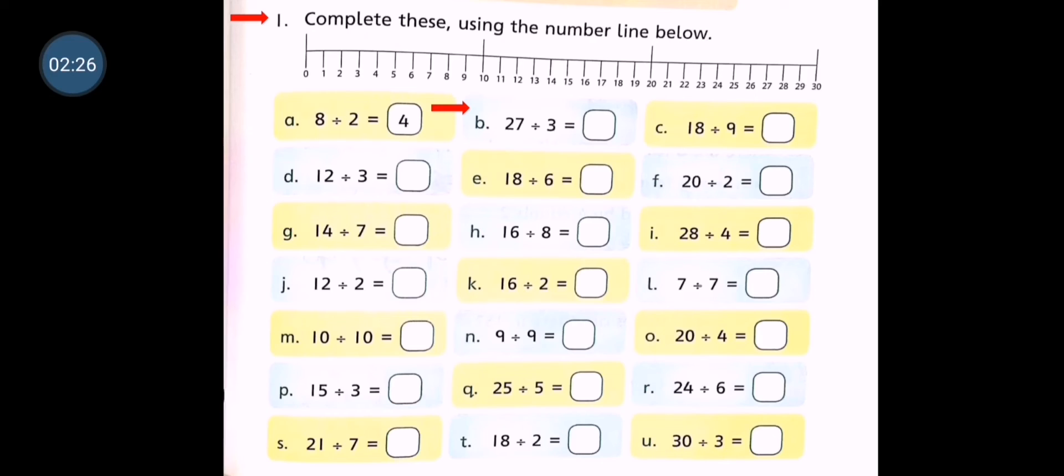And stop where 27 comes. 3 ones are 3, 3 twos are 6, 3 threes are 9, 3 fours are 12, 3 fives are 15.